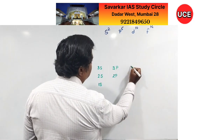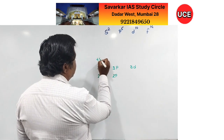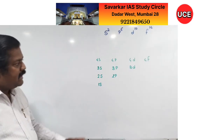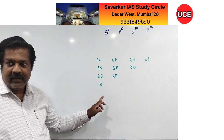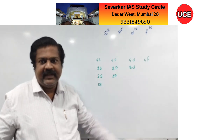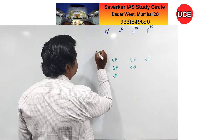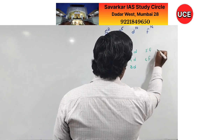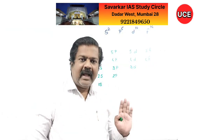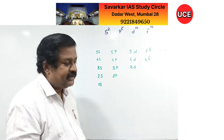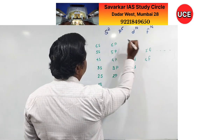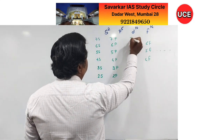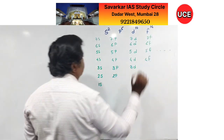Continuing: 3s, 3p, 3d. Then 4s, 4p, 4d, 4f — every time I am increasing by one orbital. Then 5s, 5p, 5d, 5f. Then 6s, 6p, 6d, 6f. And finally 7s, 7p, 7d, 7f. Whatever total atoms are available today, they have only this much. That's all — we have written out all these orbitals clearly.